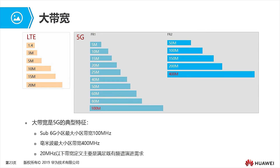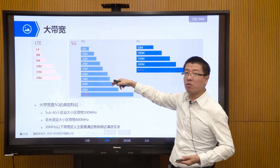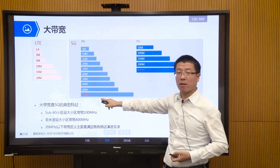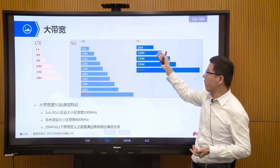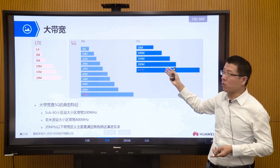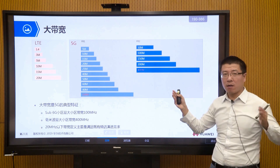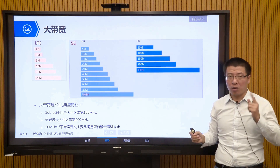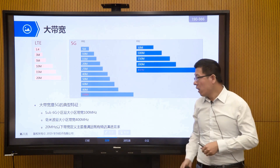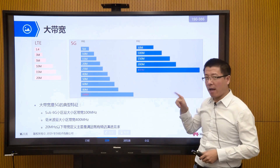Looking at the comparison: in 4G, cell bandwidth ranges from 1.4 MHz, 3 MHz, up to a maximum of 20 MHz. But in 5G, in FR1 (sub-6G), the maximum cell bandwidth can reach 100 MHz. You can also choose 80 MHz or 60 MHz, but the largest cell can use 100 MHz. In FR2 (millimeter wave), you can use 200 MHz or even 400 MHz of bandwidth per carrier. This large bandwidth is an important means to effectively increase the cell rate.